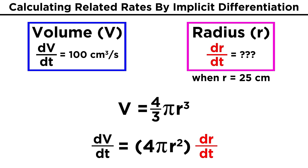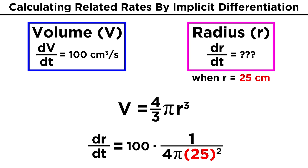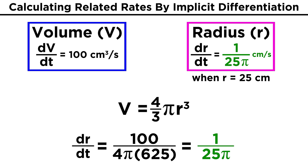Well DR over DT is what we are trying to solve for, because we are interested in how the radius changes over time. So let's solve for that. This means simply dividing both sides by four pi R squared. That means that DR over DT equals DV over DT times one over four pi R squared. We plug in our value for DV over DT, which is one hundred, and the value for R that we are interested in, which is twenty-five. We evaluate, and we get one over twenty-five pi centimeters per second.